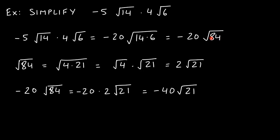We normally would go in the direction of splitting up 84 into something else, breaking the radical apart into two individual radicals. Now we're doing the exact same thing in reverse — we combined two individual radicals under a single radical because the indices match. We're left with negative 20 times √84. Now we need to simplify √84 by leaving the smallest possible number inside the radical.